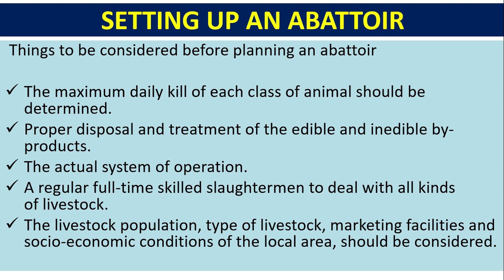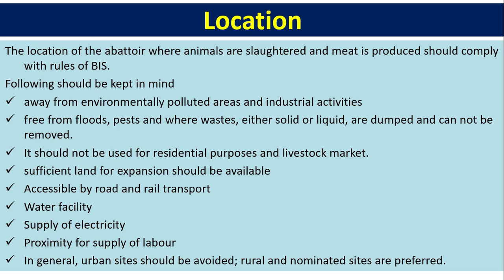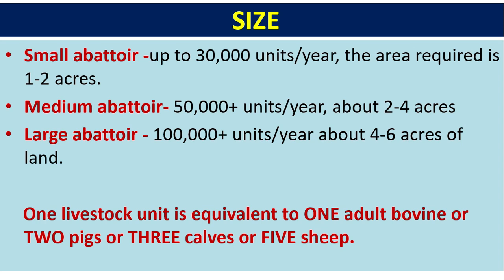The location of the abattoir where animals are slaughtered and meat is produced should comply with Bureau of Indian Standards rules. It should be away from environmentally polluted areas and industrial activities, free from floods and pests, and away from areas where solid or liquid waste is dumped. General urban sites should be avoided; rural and nominated sites are preferred.